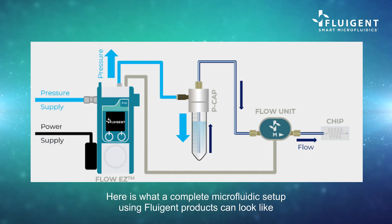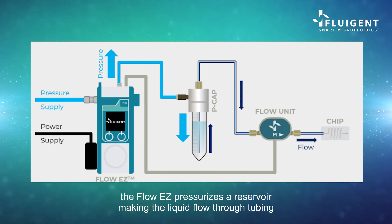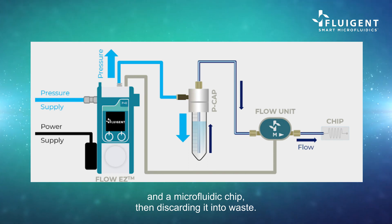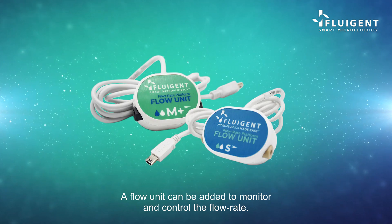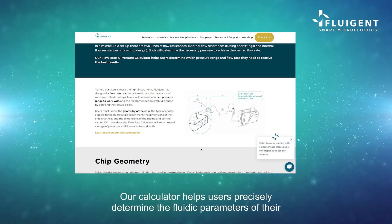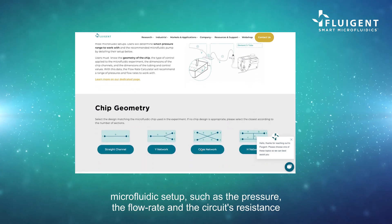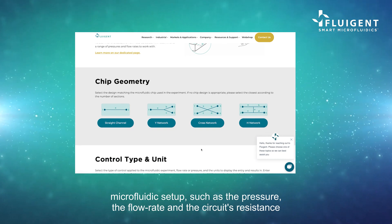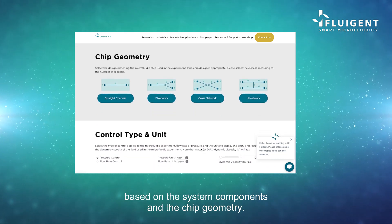Here is what a complete microfluidic setup using Fluigent products can look like. The flow easy pressurizes a reservoir, making the liquid flow through tubing and a microfluidic chip, then discarding it into waste. A flow unit can be added to monitor and control the flow rate. Our calculator helps users precisely determine the fluidic parameters of their microfluidic setup, such as the pressure, the flow rate, and the circuit's resistance, based on the system components and the chip geometry.